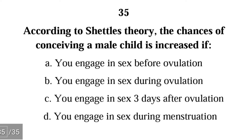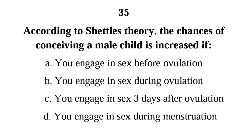Number thirty-five: according to Shettles' theory, the chances of conceiving a male child are increased if — A) you engage in sex before ovulation, B) you engage in sex during ovulation, C) you engage in sex three days after ovulation. The correct answer is B — according to Shettles' theory, the chances of conceiving a male child increase if you engage in sex during ovulation.